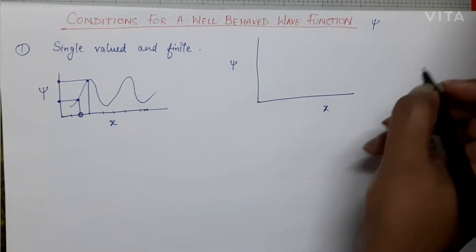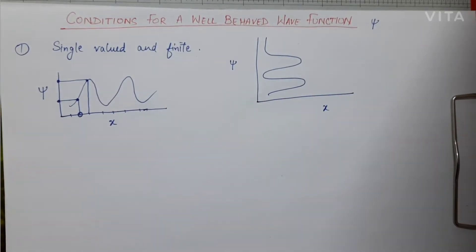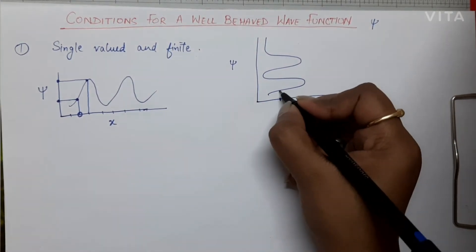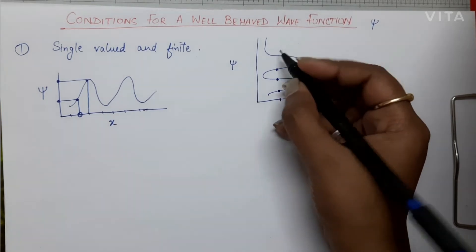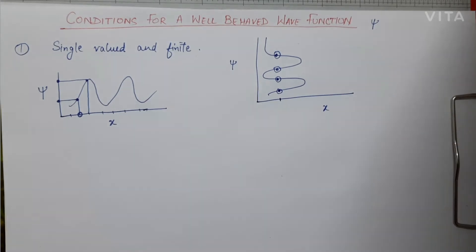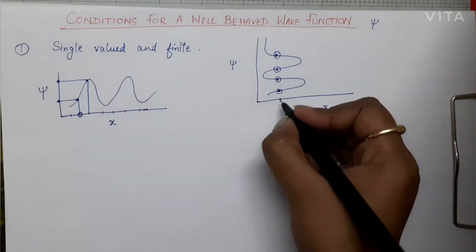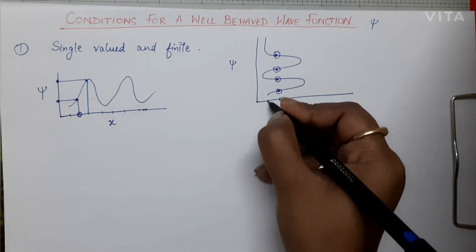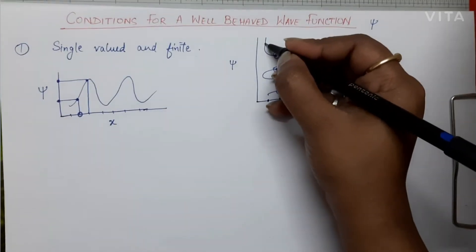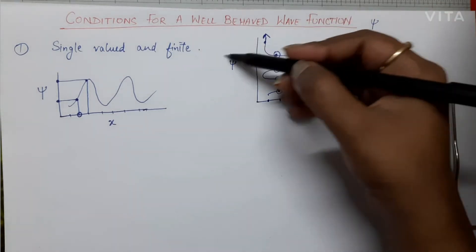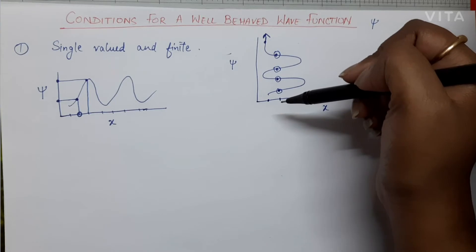On the other hand, consider a different function plotted as psi versus x. For any particular value of x, I am getting four values of psi — here, here, here, and here — so this is not a single-valued function. Also, for a particular value of x, there is a value of psi reaching infinity, so it is not a finite function either.